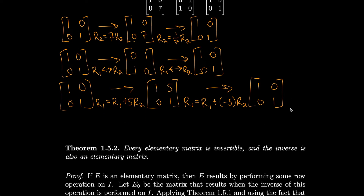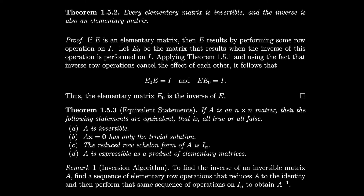Every elementary matrix is invertible, and its inverse is also an elementary matrix. If E results from performing some row operation on the identity, let E₀ be the matrix that results when the inverse operation is performed on I. By the previous theorem, inverse row operations cancel each other, so E₀·E equals the identity. Likewise E·E₀ equals the identity, so E₀ is the inverse of E — we can always undo the previous operation.